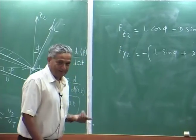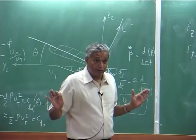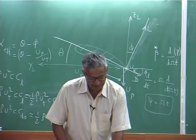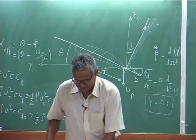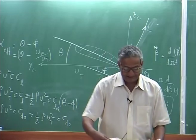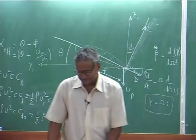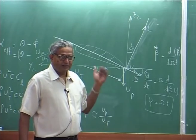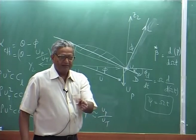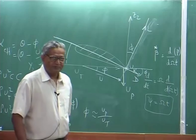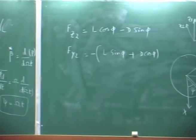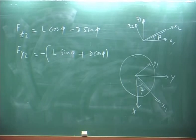We make certain assumptions, one by one, and then we will write the hub load expression. We make approximations so that you can get something like a closed-form solution. Otherwise, if you do not make any assumption, you just integrate from some root offset to the tip of the blade and get the loads, transform it. You cannot get a nice little expression. This is the reality — if you want to do practical blades, they stop right here. If you are doing it numerically, you do not even have to make these assumptions.